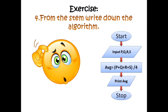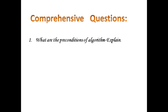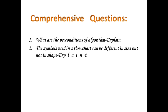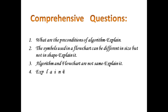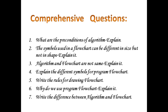Here is another example — from the stem, write the algorithm and draw the flowchart. Now I am giving you comprehensive questions: 1) What are the preconditions of an algorithm? 2) The symbols used in a flowchart can be different in size but not in shape — explain. 3) Algorithm and flowchart are not the same — explain. 4) Explain the different symbols for a program flowchart. 5) Write the rules of drawing a flowchart. 6) Why do we use a program flowchart? 7) Write the difference between algorithm and flowchart. Submit those answers to me.